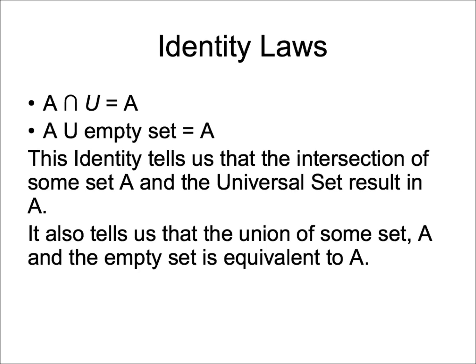The first identity law tells us that the intersection of some set A and the universal set results in A. The second identity law states that the union of some set A and the empty set is equivalent to the set A.